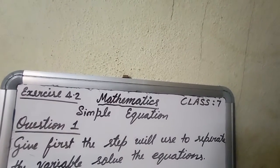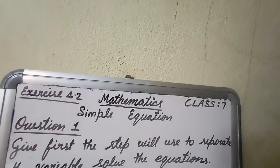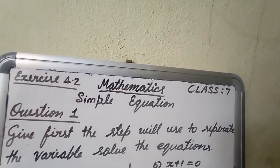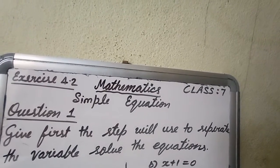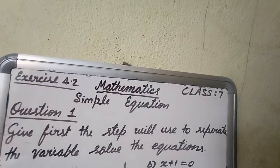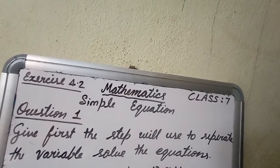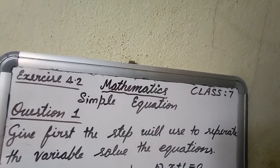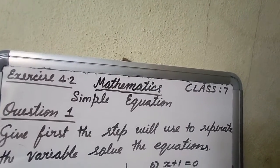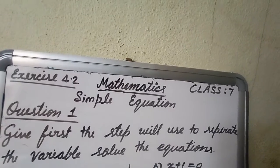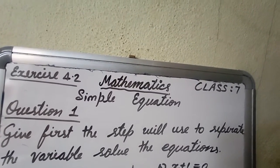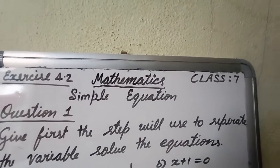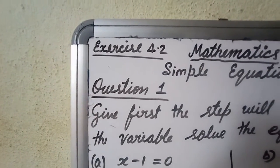My dear students, let us begin mathematics class 7, simple equation, exercise 4.2, question number 1. The question asks us to first give the step we'll use to separate the variable, then solve the equation. You should think about how to separate the variable — after that, automatically you will get the solution.